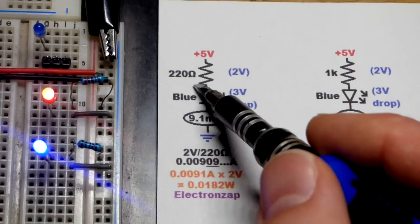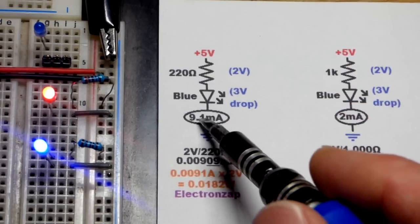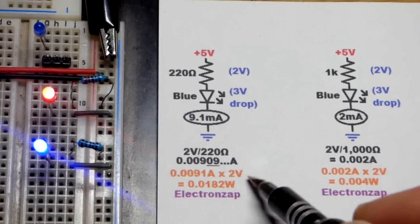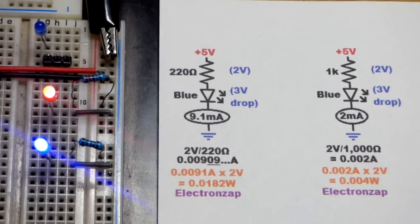That will leave about 2 volts across the 220 ohm resistor, and we've got about 9.1 milliamps of current approximately going through it. There's the math,